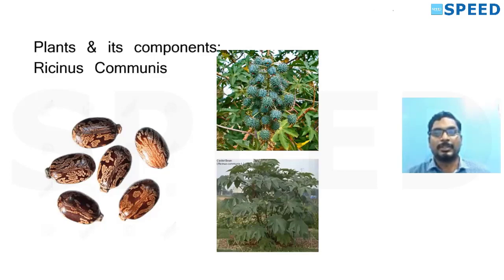This is the most repeated toxicology seed in MCQs — seeds of Ricinus communis, the castor bean. One important point to identify the seed: the seeds will be brown and shiny, with a variegated or crisscross pattern on the surface. These shiny brown patterned seeds are called Ricinus seeds or castor seeds or castor beans.